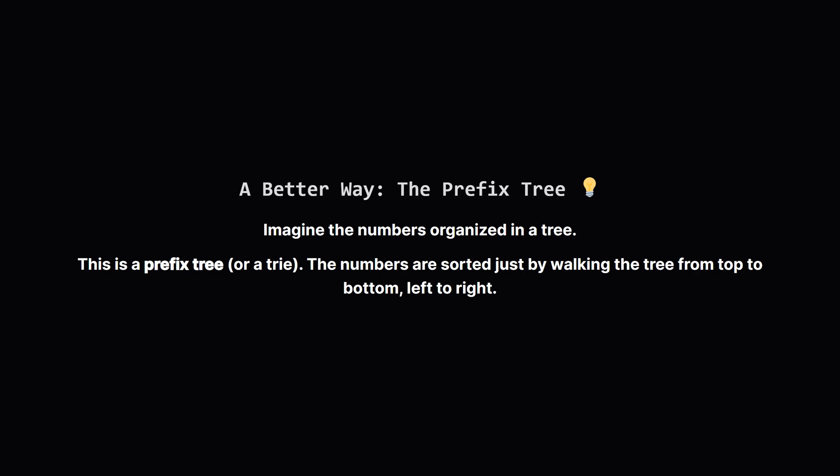Instead of a flat list, let's think about the numbers as a tree. At the very top, we have nodes for 1 through 9. Under the 1 node, we have its children: 10, 11, 12, and so on. Under the 10 node, we'd have 100, 101. You get the idea.